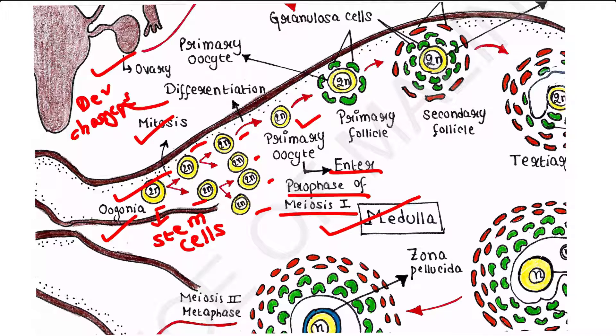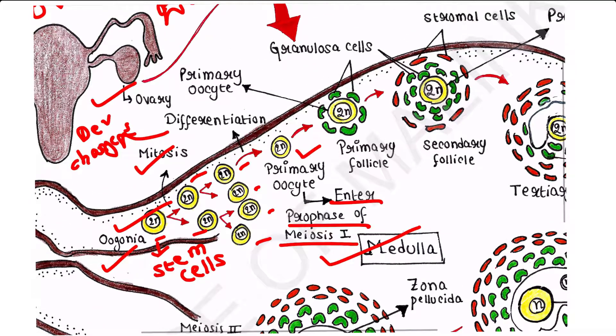Each primary oocyte then gets surrounded by a single layer of granulosa cells. Single layer of granulosa cells are surrounding the primary oocyte. It is called primary follicle. Till this part, everything is happening inside the ovary of the embryo. Now the baby girl comes out of her mother's womb and is born into the world with this primary follicle.